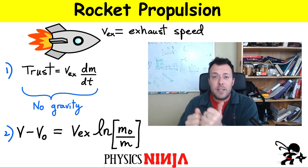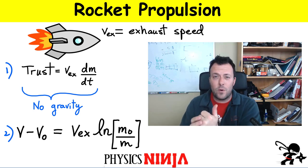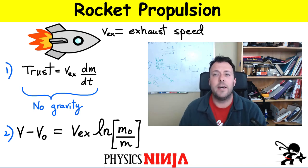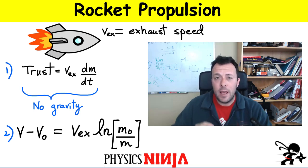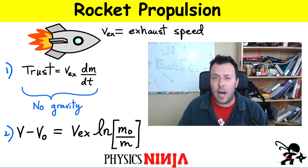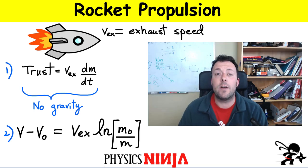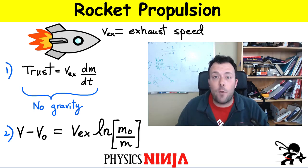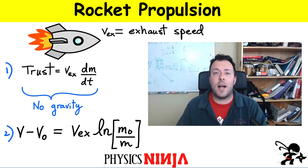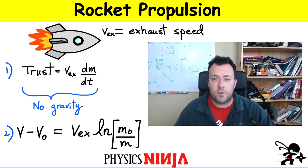What happens is there's going to be some mass ejected in one direction, so there's a force acting on that mass due to this combustion. And if there's a force acting on mass in one direction, there's an equal and opposite force acting on the rocket in the other direction. We want to find what that force is, because that force is what makes the rocket accelerate. This is what we call the thrust force, and it's given by equation one here in the limit where there's no force of gravity.